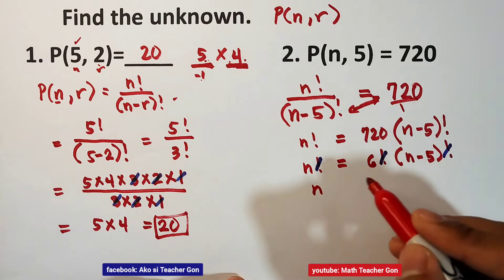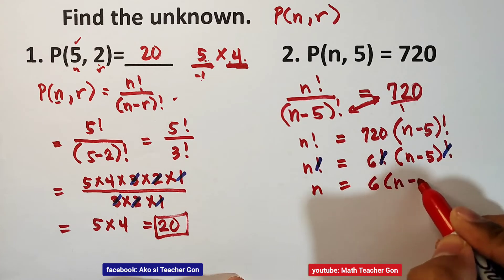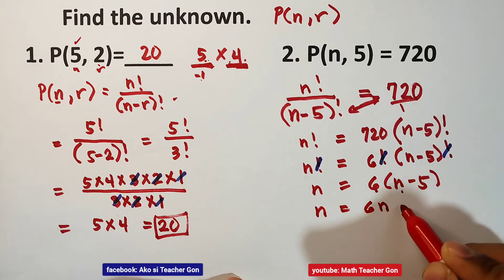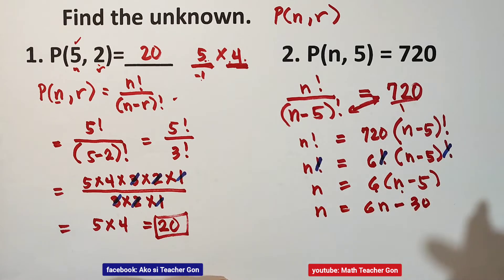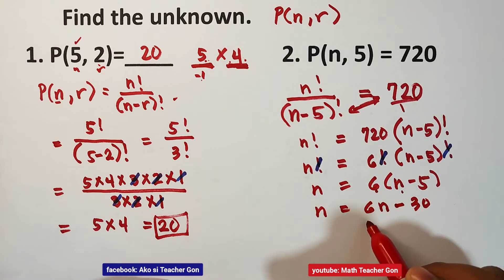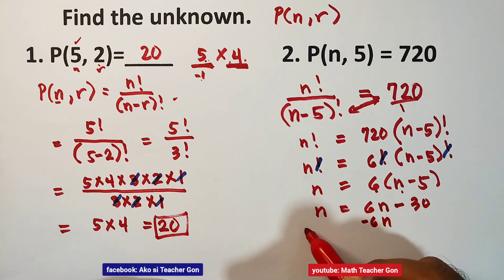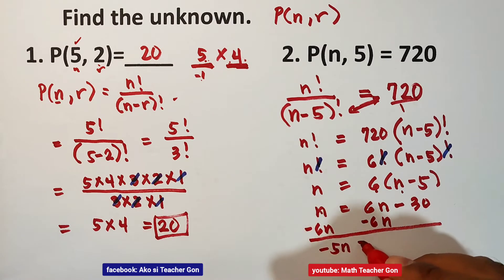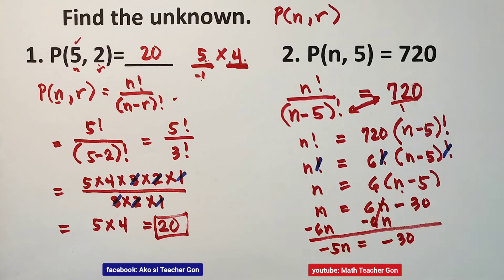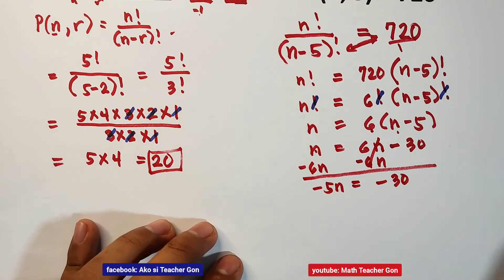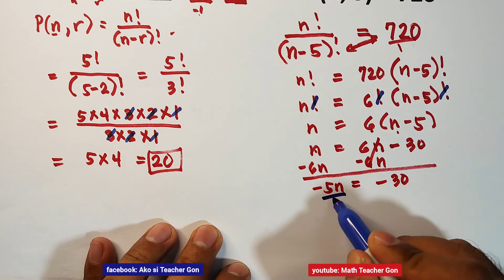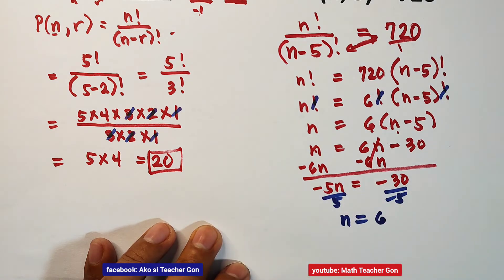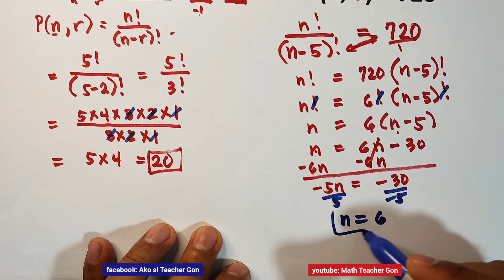We can cancel out the factorial symbols, leaving n equals 6 times the quantity n minus 5. Distributing 6, we get n equals 6n minus 30. Subtracting 6n from both sides gives n minus 6n equals negative 5n equals negative 30. Dividing both sides by negative 5, the value of n is equal to 6.